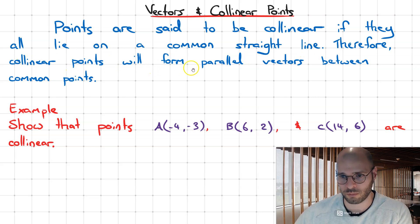Therefore, collinear points will form parallel vectors between common points. Let's have a look at what this means by example.